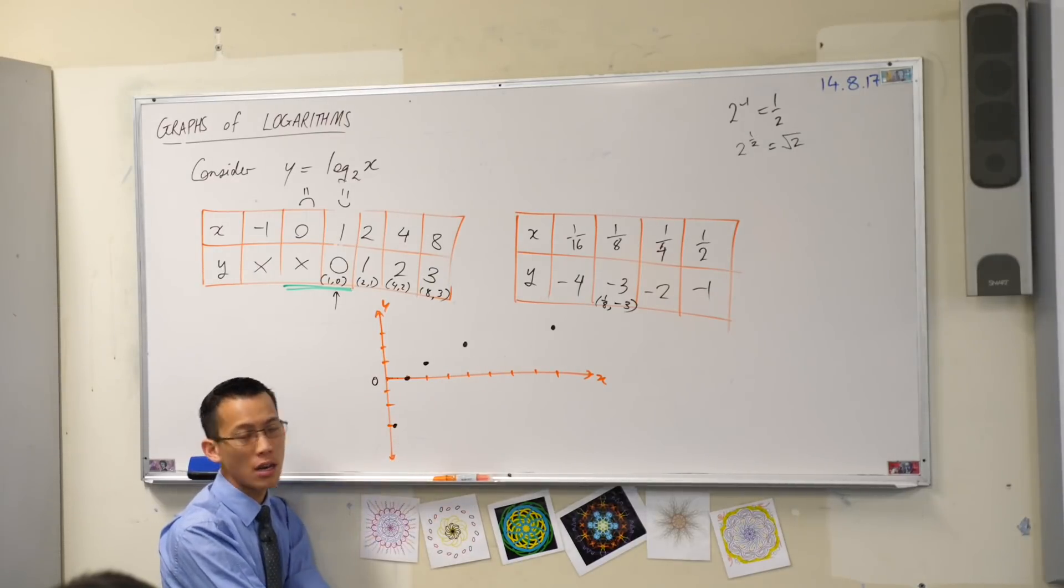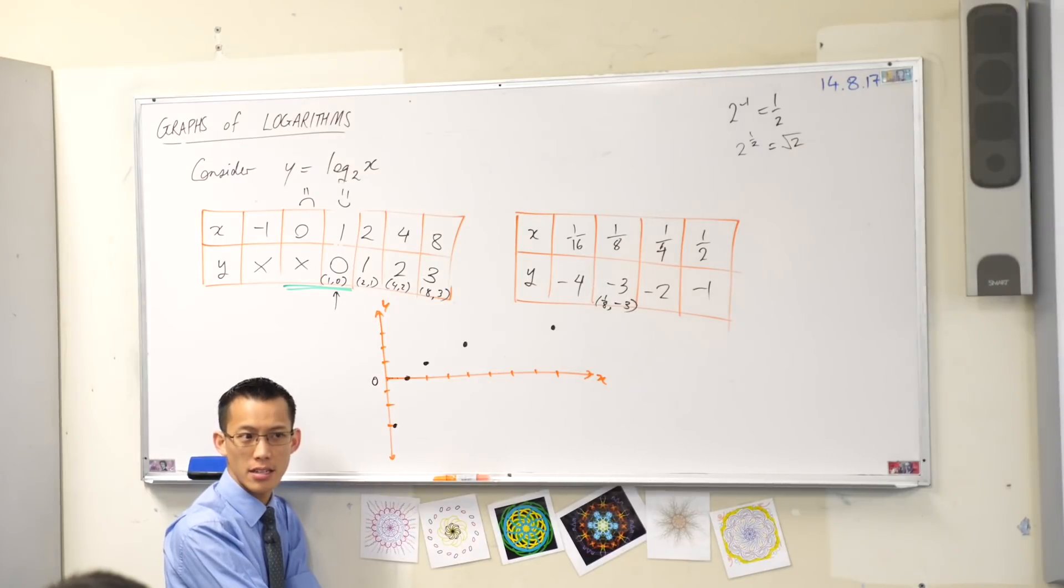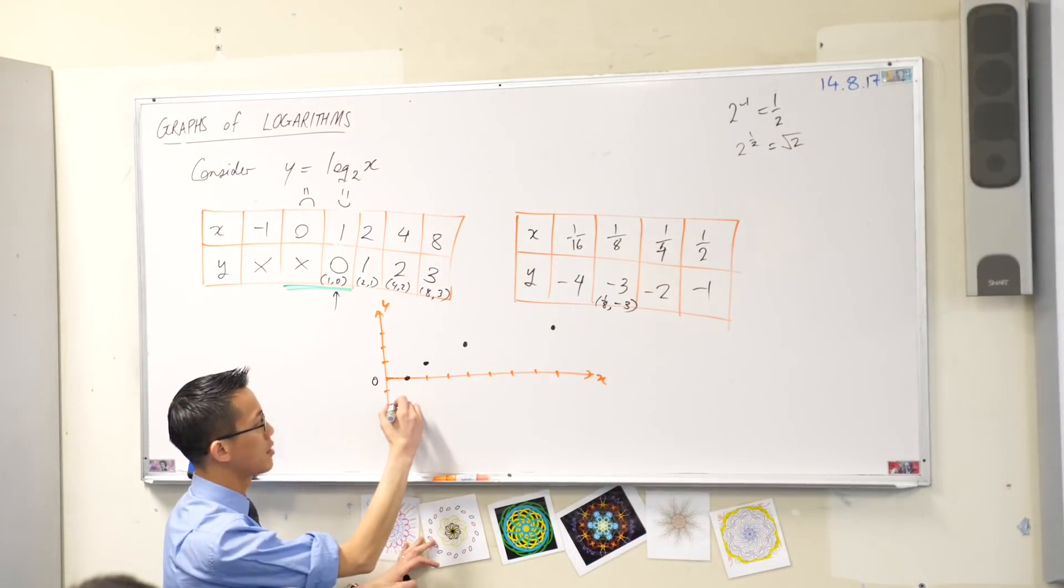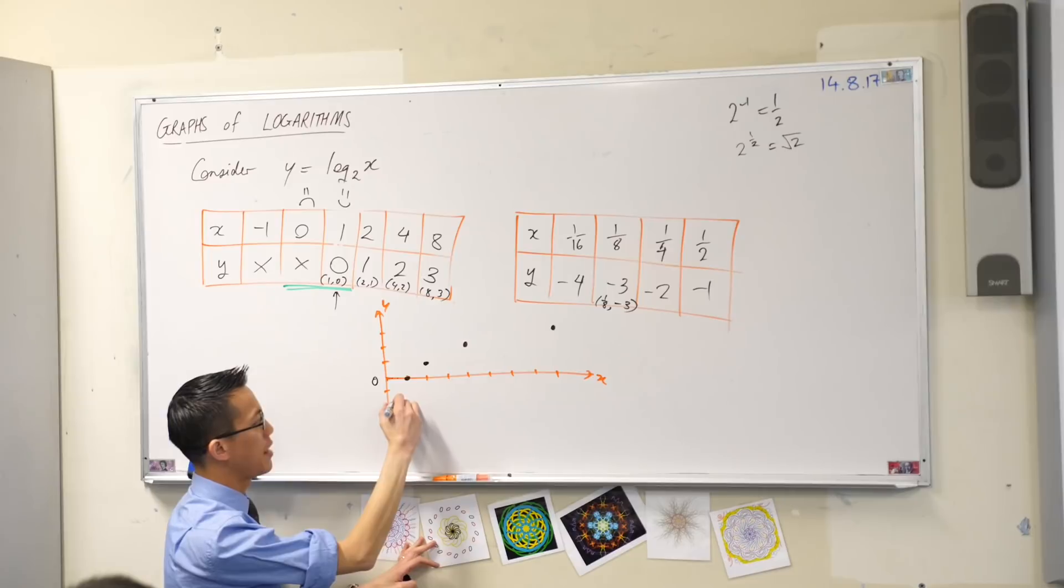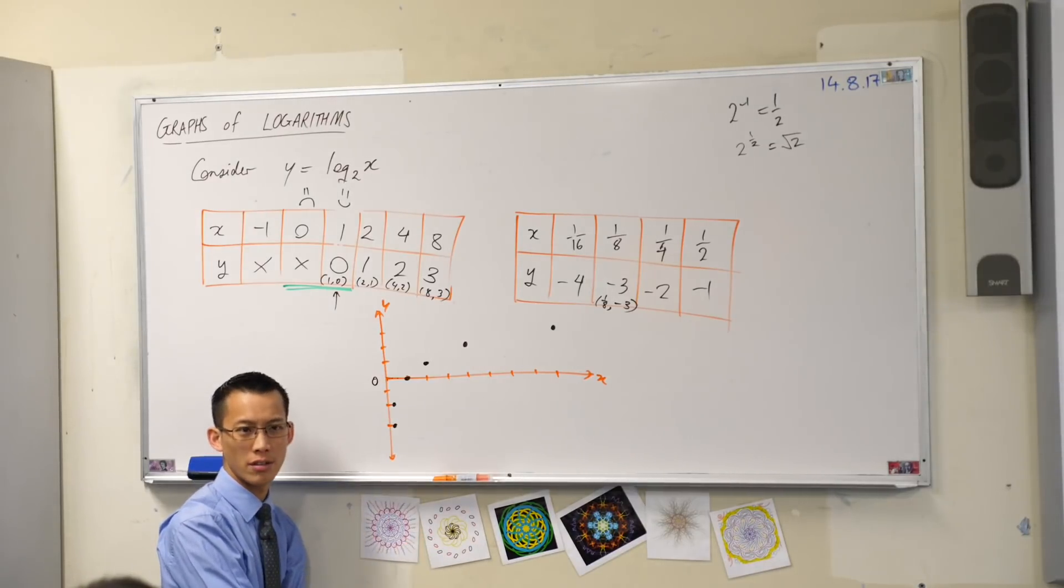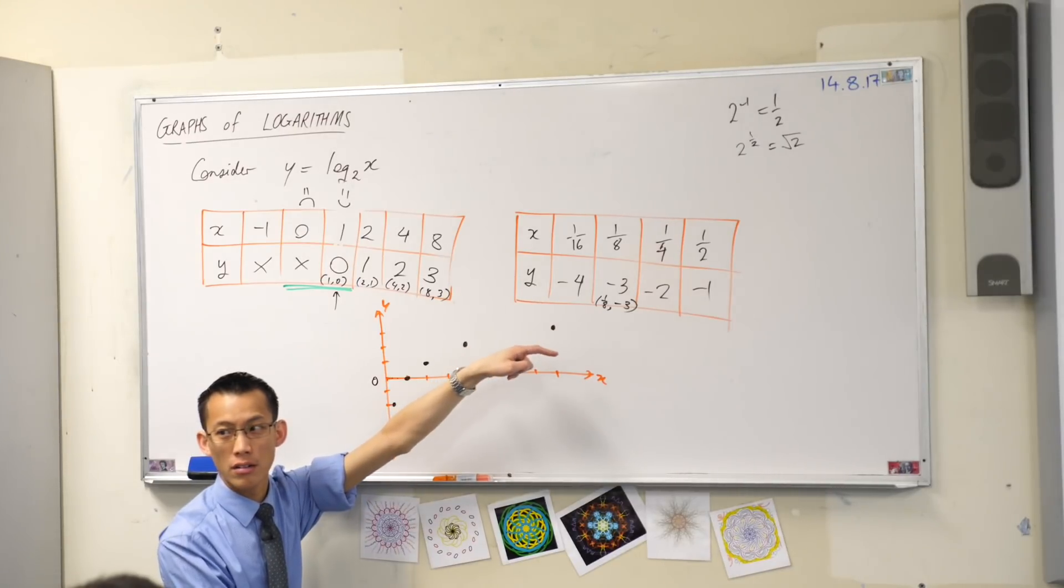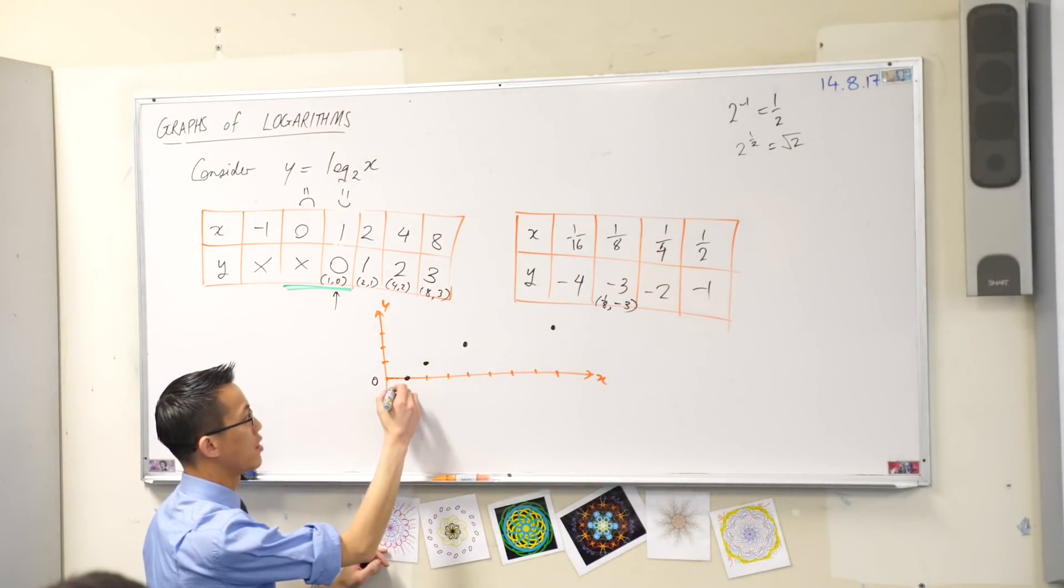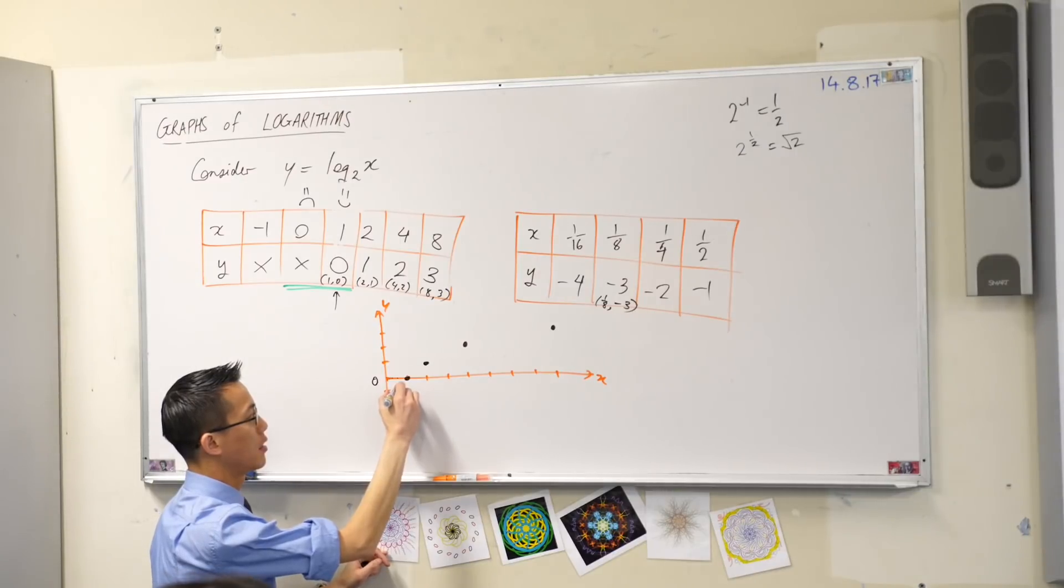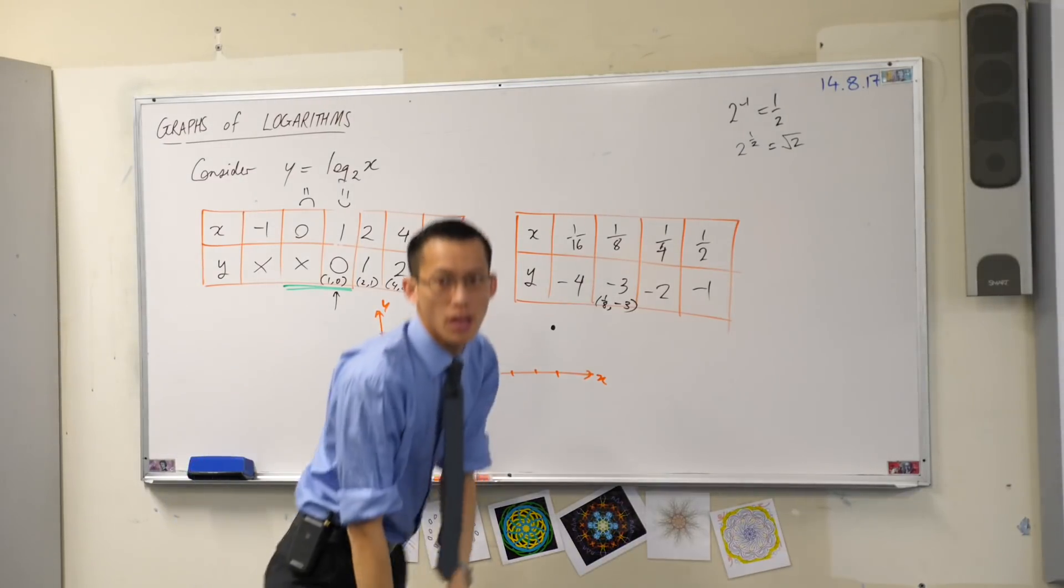What's the second last one over there? What are the coordinates? A quarter and negative two. So that's about there. A little bit further over, not much though. And then the last one over there is a half, comma, negative one. So that's around the halfway between zero and one.